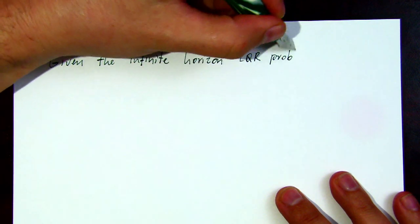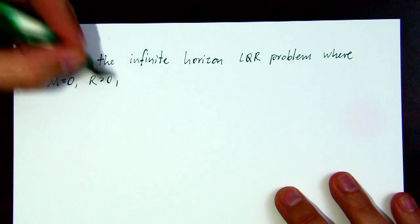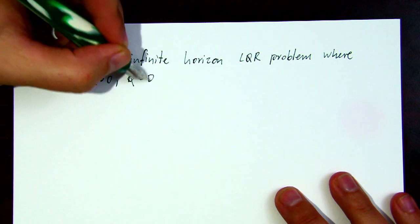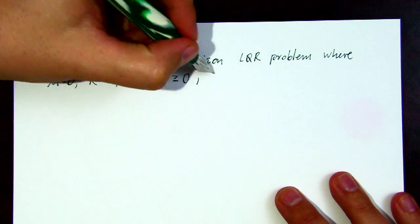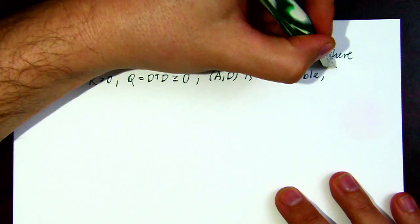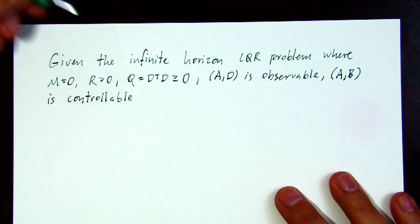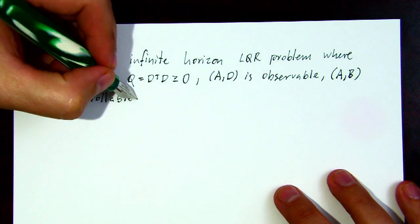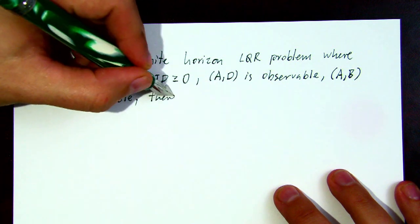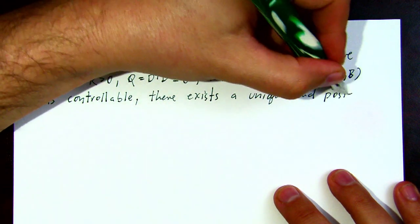Now we're equipped with these tools — you may need to go back over them carefully if you haven't seen them before, as this would be the subject of a whole other class. Now we're going to use Lyapunov's method to prove asymptotic stability of the closed-loop LQR system. For the infinite horizon LQR problem, the terminal matrix M is zero, the control penalty matrix R is positive definite, the state penalty matrix Q is positive semi-definite.